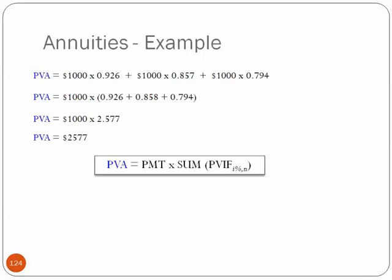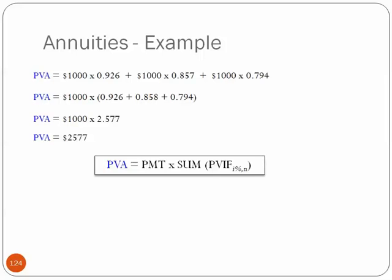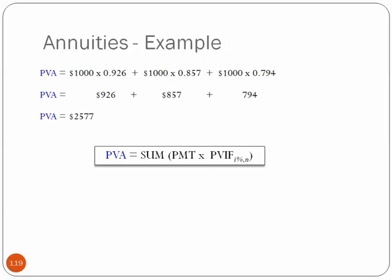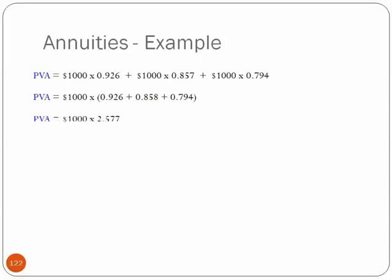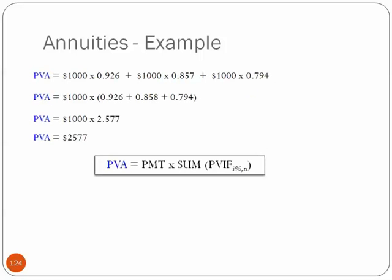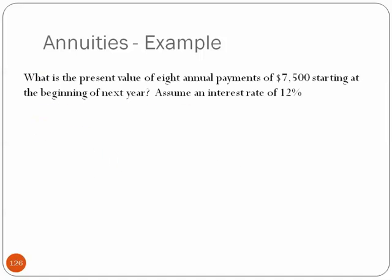The present value of the annuity is, in the previous slide, we first calculated each term's payment times its present value interest factor, and then we added them all up. In this example, we take the payment out, and we just add up the present value interest factors, and then we multiply it by the payment. It's two ways of saying the exact same thing.